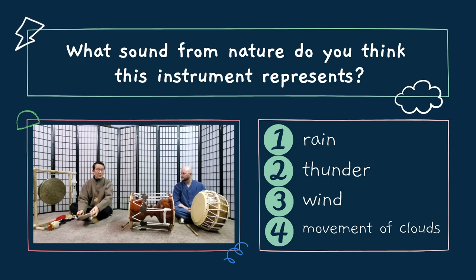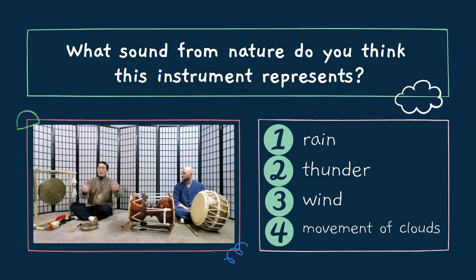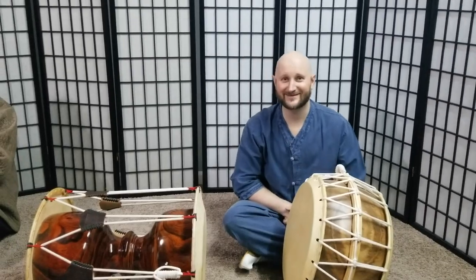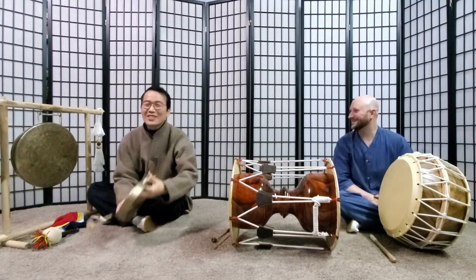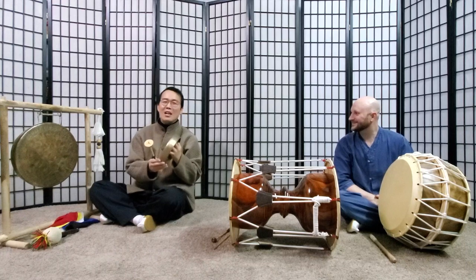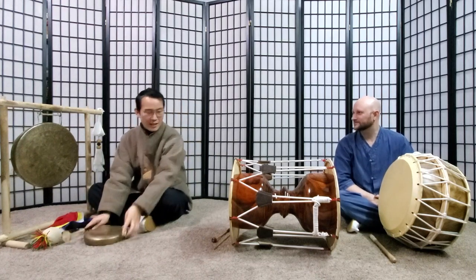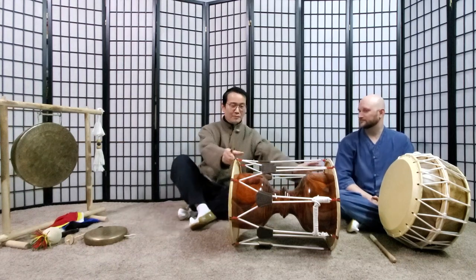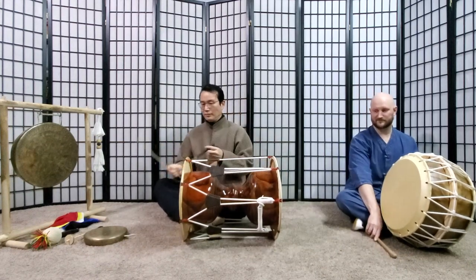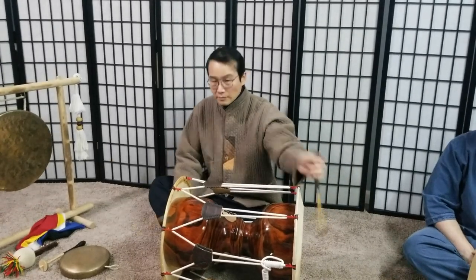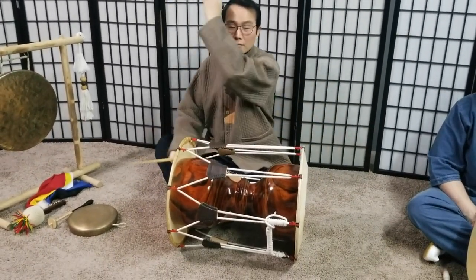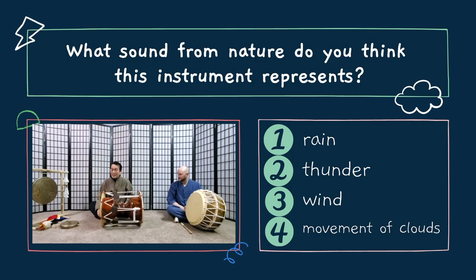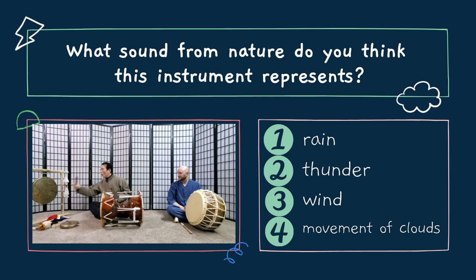Now for the kkwaenggwari: number one, rain; number two, thunder; number three, wind; number four, the movement of cloud. What do you think? The answer is thunder. And now let's consider the janggu sound.